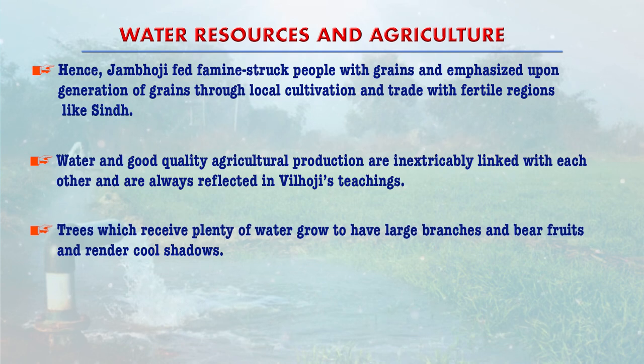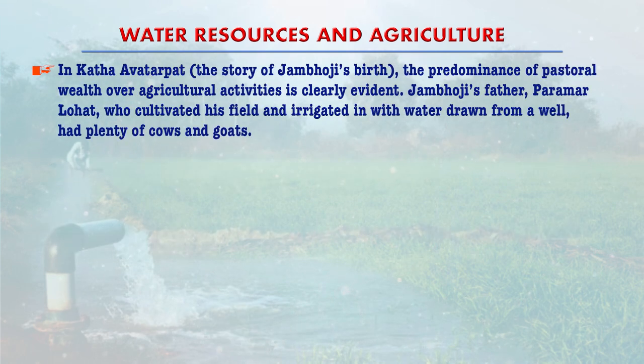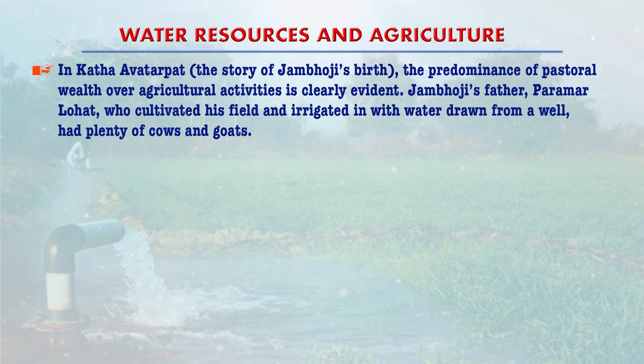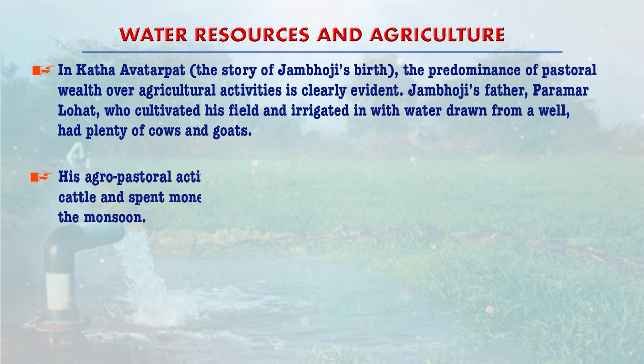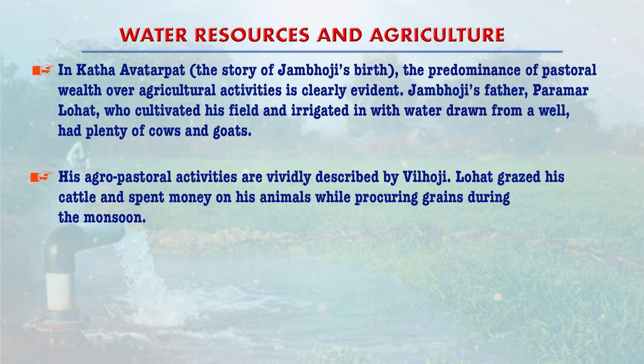In another account Jambhoji is said to have grown a forest, and a Purviya with his camel laden with sacks was delighted to see the mounds of grains Jambhoji procured from the forest. Hence Jambhoji fed famine-struck people and emphasized generation of grains through local cultivation and trade. In the story of Jambhoji's birth, the predominance of pastoral wealth over agricultural activities is clearly evident — his father Parmar Lohat cultivated his field with well water, had plenty of cows and goats, and his agro-pastoral activities are vividly described.